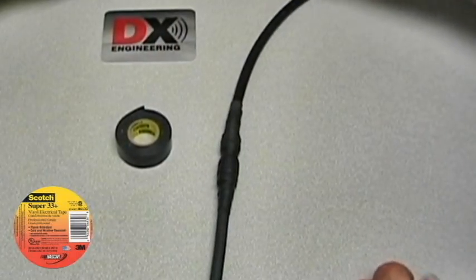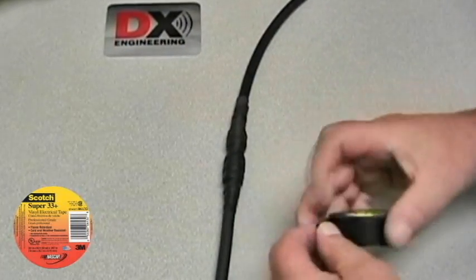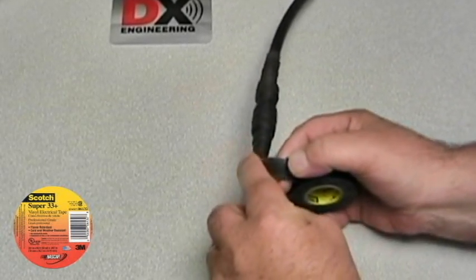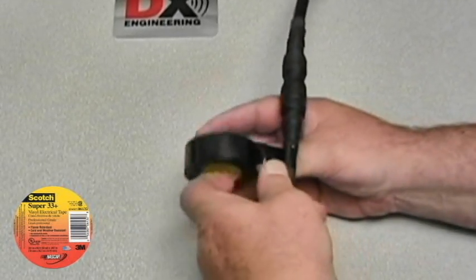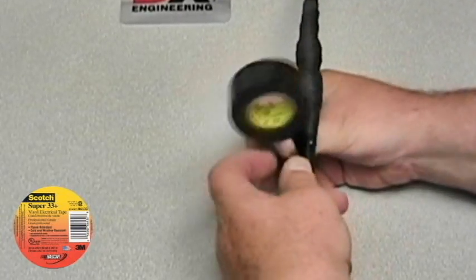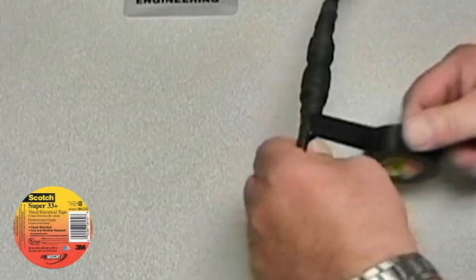To protect the Temflex from UV damage, overwrap it using the Super 33 Plus electrical tape. Again, you want to wrap starting just before the Temflex to just after the Temflex, overlapping the tape by about 25 to 50%.